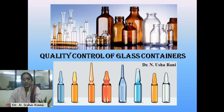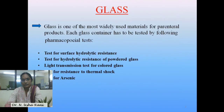Now we will go into the description of quality control of glass containers. Glass containers are especially used for packaging of parenteral products. In the picture you can see different glass containers like bottles, vials, ampoules, etc., that are used to pack parenteral products.